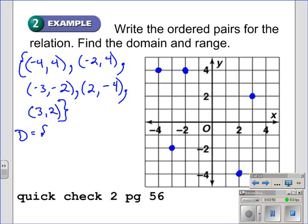Just like we did with the relation, we want to enclose the set of numbers in a bracket and include all the different values for the domain, or all the different x-values: negative four, negative three, negative two, two, and three. Normally, we put these numbers in order from small to great.